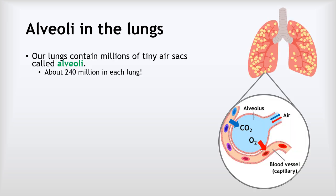We can see all of those adaptations for maximising diffusion in the alveoli in our lungs. Our lungs contain millions of these tiny air sacs, which we call alveoli. The air comes down our windpipe, separates into our two bronchi, and then we have all these narrow tubes that branch off into smaller and smaller branches until they end in these little sacs called alveoli. There are about 240 million of these alveoli in each lung.